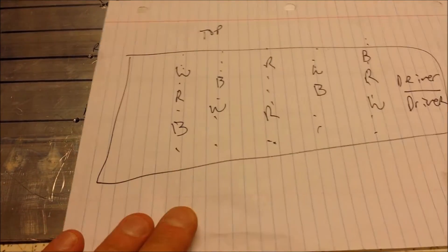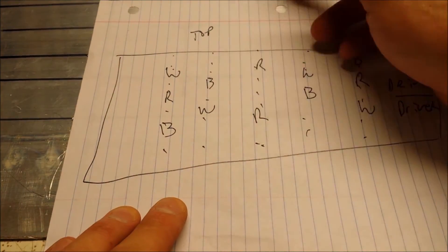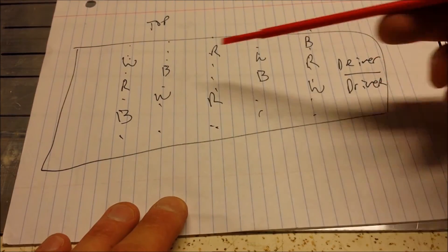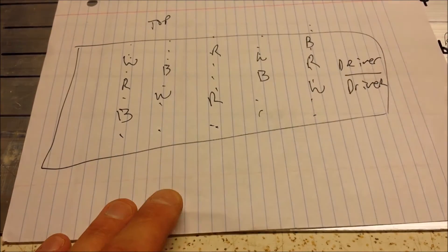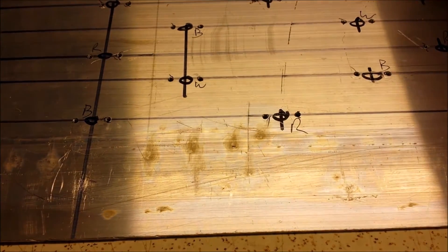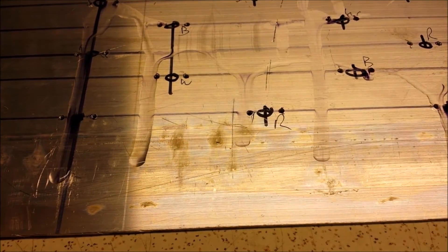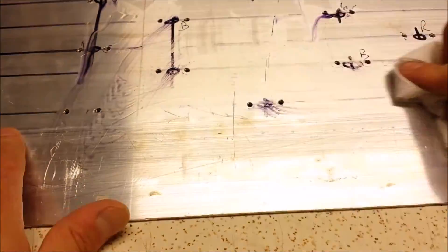But before you clean it up, get yourself a template. So a piece of paper I have. I just wrote top to reference the top. I'm going to put the two drivers on this side just like the other one, and then these are all the LED colors. Now what I can do is take some flux remover, which is just alcohol and acetone mix, and a paper towel, and I'm going to clean this up.